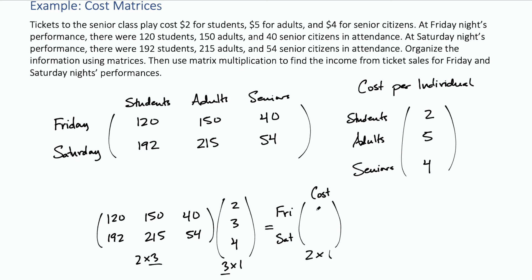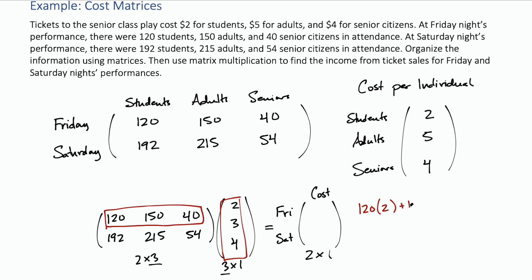For the first entry — Friday — we take our first row and multiply it by that column. That's 120 times 2, plus 150 times 5, plus 40 times 4.